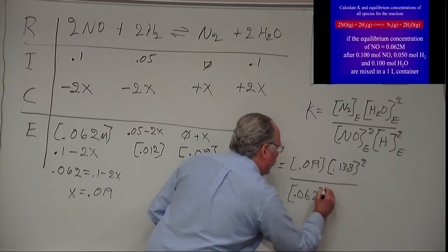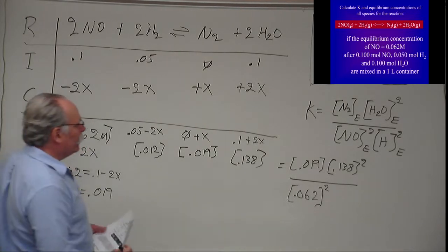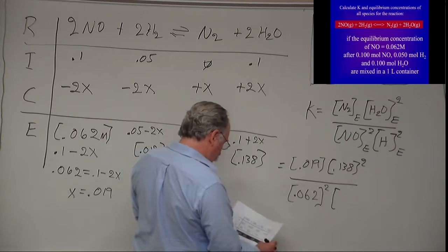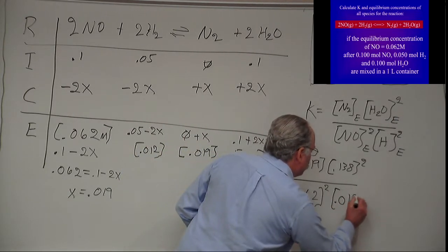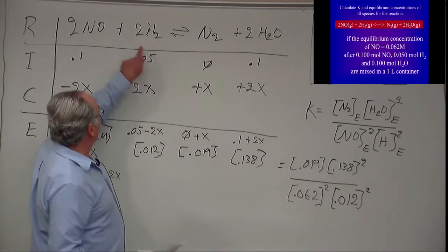Which is my NO, and that was actually given to me in the problem statement. And I have the last one which is the H2 which is 0.012, and that has to be squared because the coefficient is 2. And I get out my calculator and K is equal to 653.